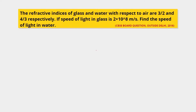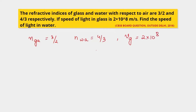We have been given the refractive index of glass with respect to air is 3/2, and the refractive index of water with respect to air is 4/3. The velocity of light in glass is 2×10⁸ m/s. We have to find out the speed of light in water.